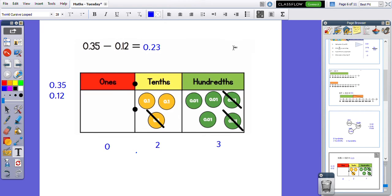We can see the answer to this question is 0.23. Nice and easy. You can do it the same way you would do column, but you are just crossing off in the correct area of your place value grid.